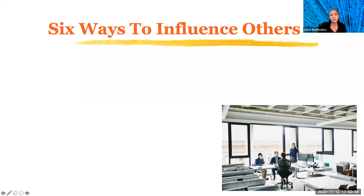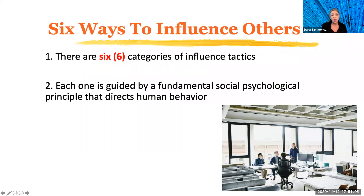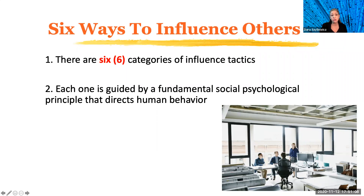He came up with six ways — we're going to give the big six in this talk. What he argues is that there are six categories of influence tactics, and what's important is identifying the social psychological principles that direct or push human behavior. He's saying he didn't come up with these — he identified the way people already act and asked: how can people use them to influence or persuade others?